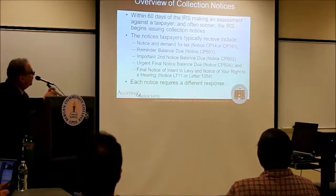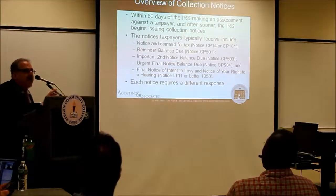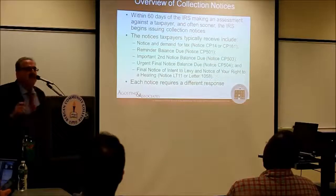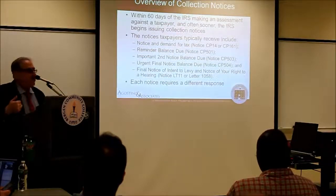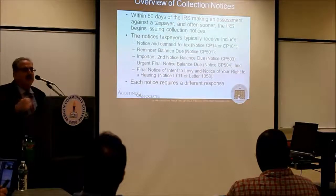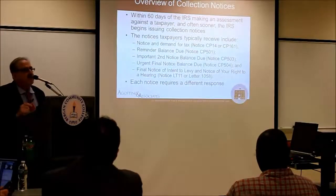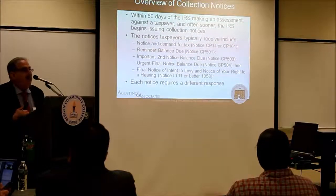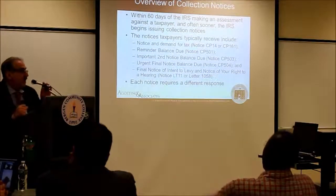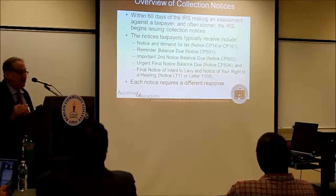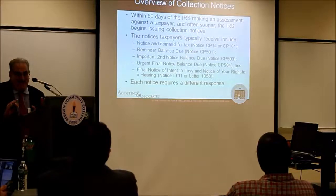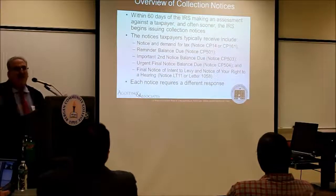Once you get an assessment, before you even get all the other notices and demands, if your taxpayer can't pay, you can ask for an extension of time to pay. It's Form 1127. Either when you're filing the return or when you're about to get a notice of deficiency or you get your first notice, you file your 1127. For example, if a boxer has a hundred-million-dollar purse coming, you can say payment now would be a hardship.